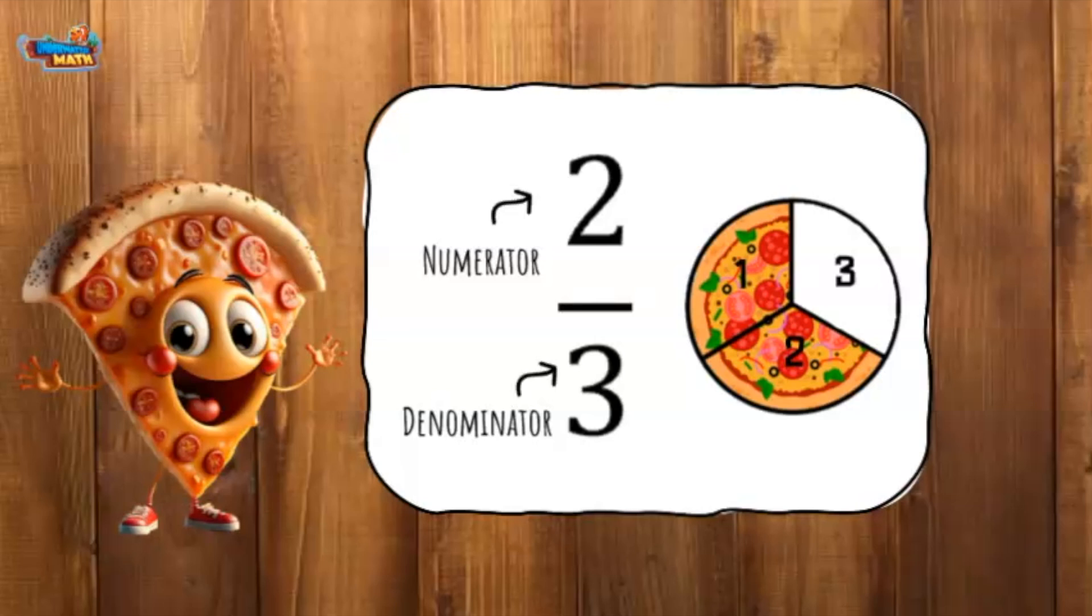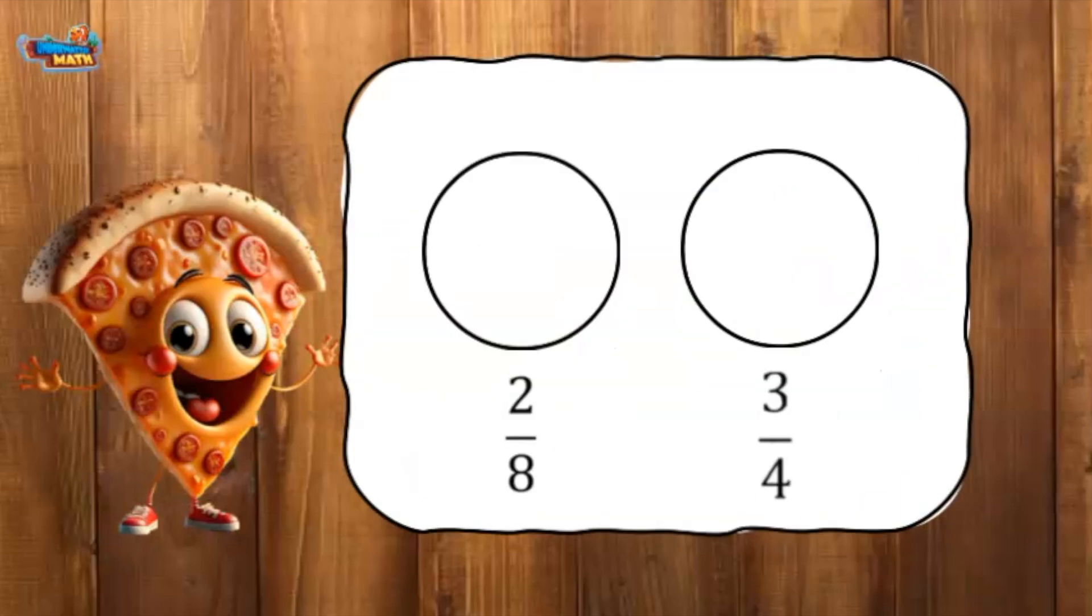There are two parts represented with pizza on the model. The model represents two-thirds. When comparing fractions, you can draw models to determine which fraction is larger.